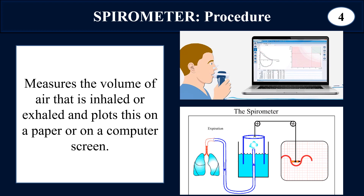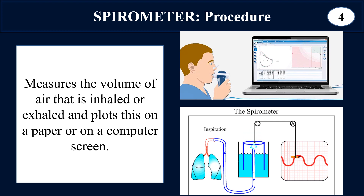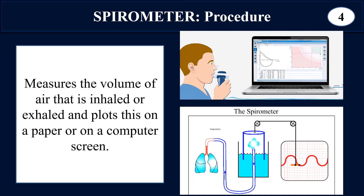In the fourth step, when the procedures are performed, the data are analyzed. Results are obtained in the form of a graph. According to the new method, graphs are obtained on the computer screen, while according to the old method, graphs were recorded on paper. By looking at the specific values for lung volumes and capacities, we can analyze if the lungs are working properly. Slight variations in these values may indicate underlying abnormalities.